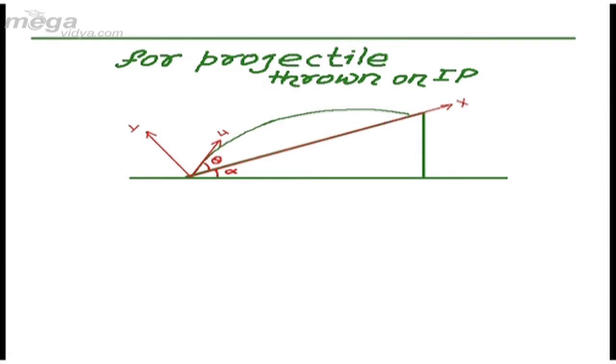For projectile thrown on inclined plane, I would like to draw it in front of you. This is an inclined plane ABC. We have drawn the projectile from point A, which is taken as point of projection at some angle theta with the inclined plane with velocity u.